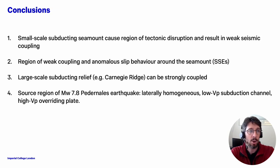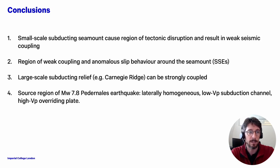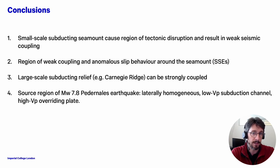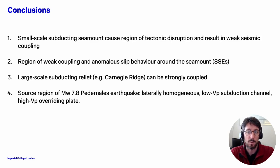So these are our take-home points. We see that small-scale subducting seamounts cause a region of tectonic disruption and weak seismic coupling. There's also a region of weak coupling around the seamounts and anomalous slip behavior — this is where we find slow slip earthquakes. And then we see that large-scale subducting relief like the Carnegie ridge can be strongly coupled — the source region of the Padernales earthquake is on the edge of the Carnegie ridge, with a more laterally homogeneous plate interface, a low-VP subduction channel, and a high-VP overriding plate.